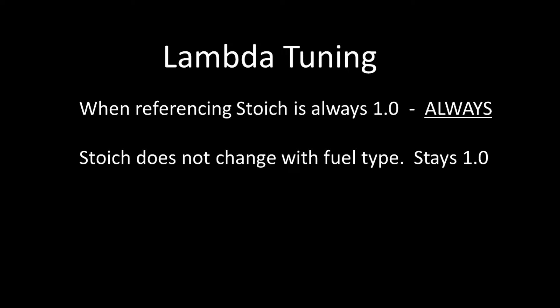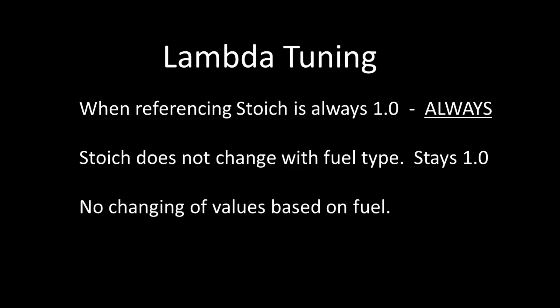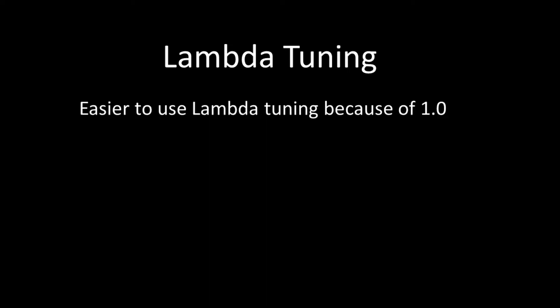You don't have to switch back and forth between fuels like you do with AFR, where that ratio changes depending on what type of fuel you're using. It's always 1.0 lambda — or 'lambda 1' — which means you're at stoic, at that perfect ratio of burnt fuel and air, no matter what type of fuel you're using. That's one of the major reasons people tune in Lambda — it eliminates the possibility of making a mistake. It's always 1.0, doesn't matter what fuel.